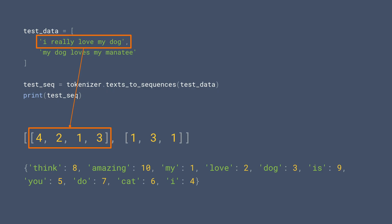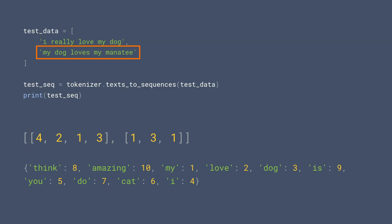Why? Because the word "really" wasn't in the word index. The corpus used to build it didn't contain that word. And "my dog loves my manatee" ends up as 1, 3, 1, which is my, dog, my — because "loves" and "manatee" aren't in the word index. So as you can imagine, you'll need a really big word index to handle sentences that are not in the training set. But in order not to lose the length of the sequence, there's also a little trick that you can use.